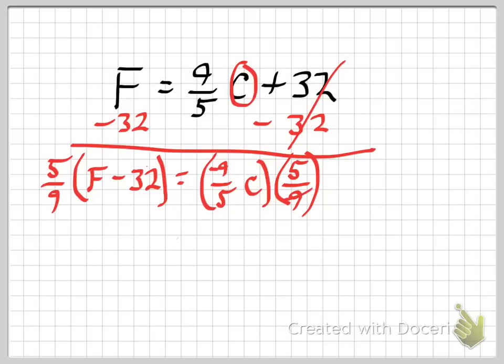Now, the 9s cancel out over here, the 5s cancel out, and I'm left with just C, and I get the equation 5 ninths times F minus 32.